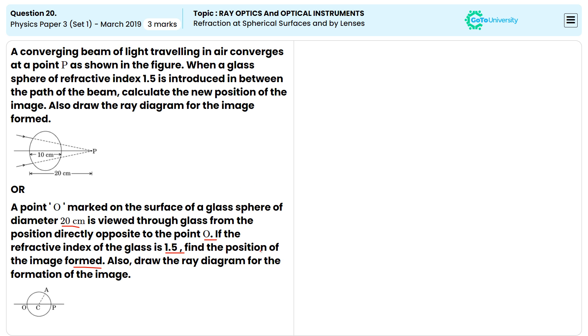Okay. Now, we solve this one. We know the conditions like N1 by minus U plus N2 by V equals N2 minus N1 divided by R. Now, substitute the values: 1.5 divided by 20 plus 1 divided by V equals 1 minus 1.5 divided by minus 10. We get the answer.